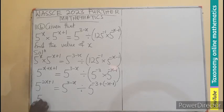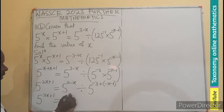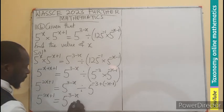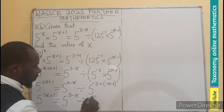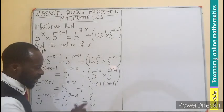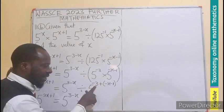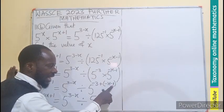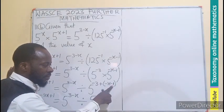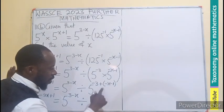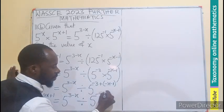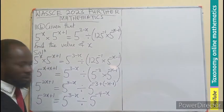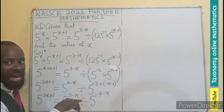So we have 5 exponent 2x plus 1 equals to 5 exponent 3 minus x divided by 5 exponent. Don't forget this is negative 3 minus 1. That will give us a negative 4. So negative 4, this is just having the same negative x. The laws of multiplication has been applied.